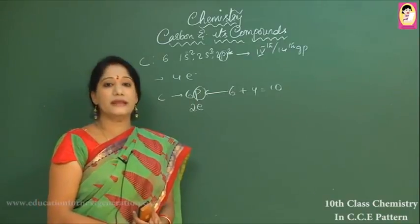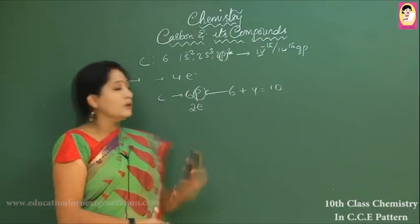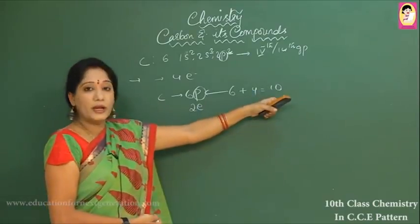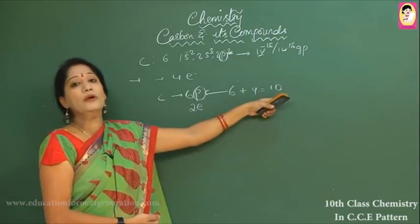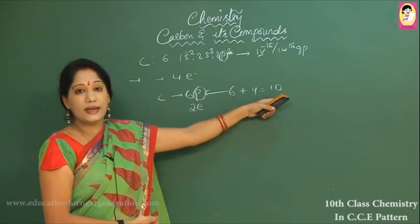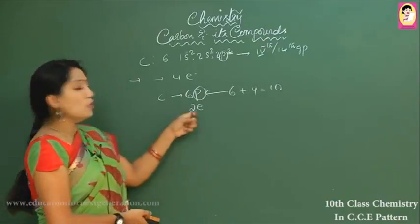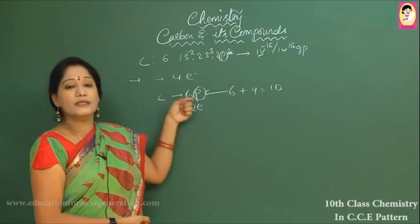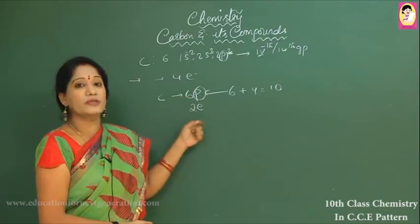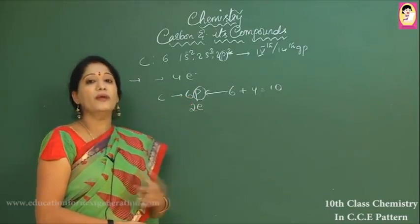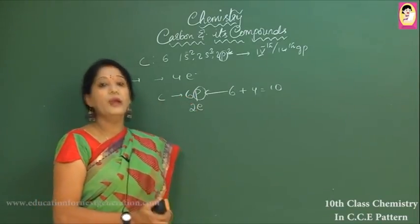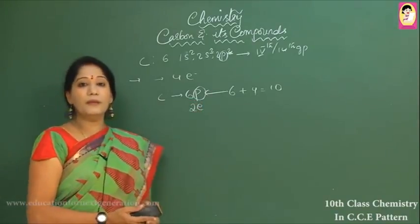Similarly, if carbon accepts four electrons, it would have ten electrons, but six protons cannot hold ten electrons because the negative charge increases too much. In the same way, removing four electrons from carbon is also not possible — six protons would not permit it.